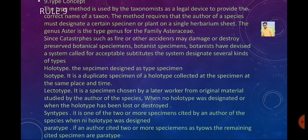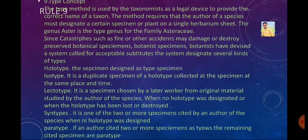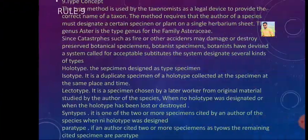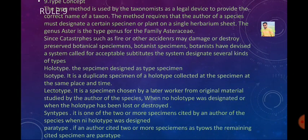The specimens selected by later workers from original material are called lectotypes. The syntype is one of two or more specimens cited by an author when no holotype was designated — if an author collects two plants at once and does not select a holotype, both become syntypes. The paratype: if an author cites two or more specimens as types, one becomes the holotype and the remaining cited specimens are paratypes. The neotype is designated when all original specimens and their duplicates have been lost or destroyed.